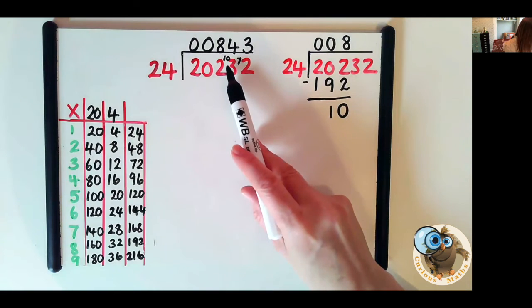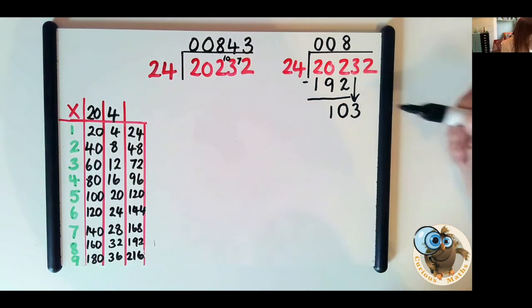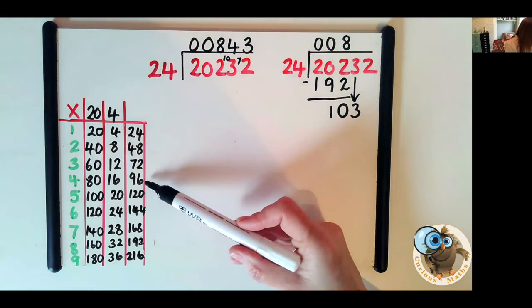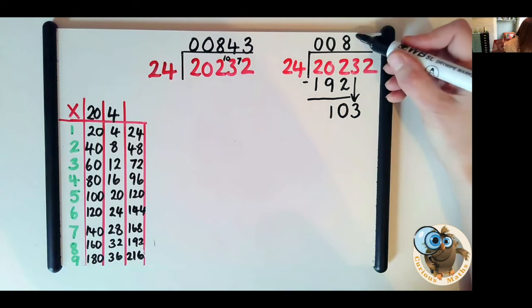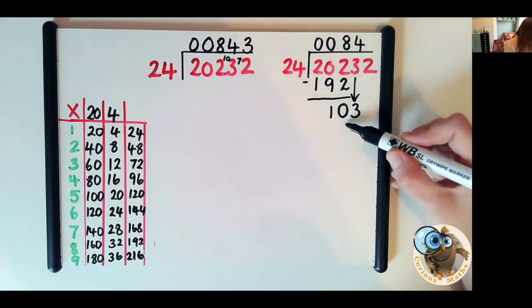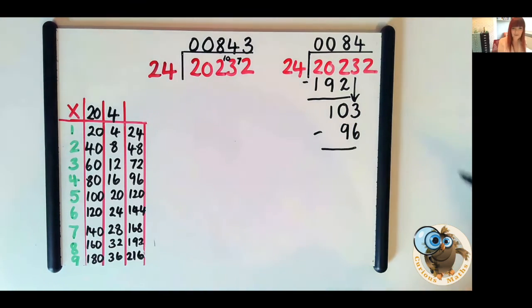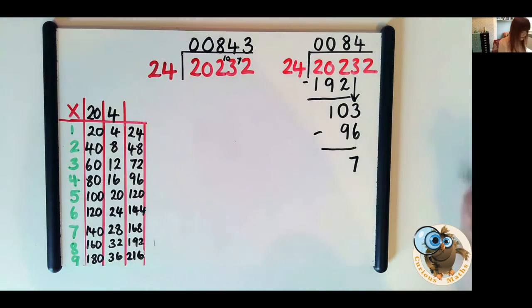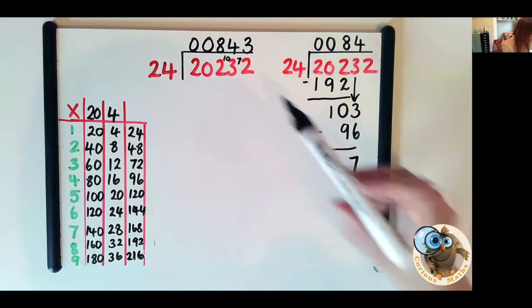Look here's our 10 remaining there and that became 103 so we do the same. So now we have to think about how many 24s are in 103 and we can see that 4 24s are 96. 5 24s is too many. So we put the digit 4 here. 4 24s equal 96. We put it underneath and we take it away. So 96 to 100 is 4, 100 to 103 is 3 more. That gives a difference of 7.